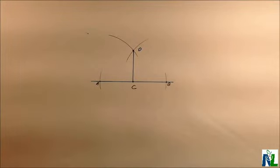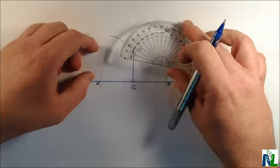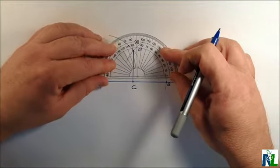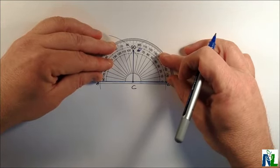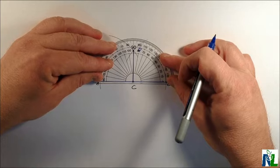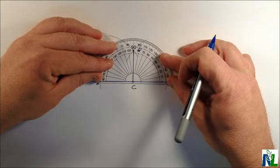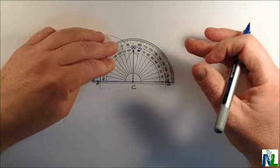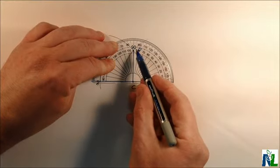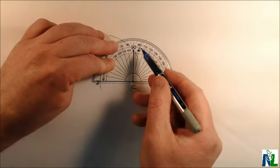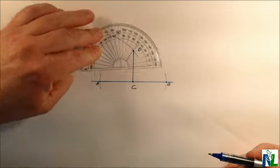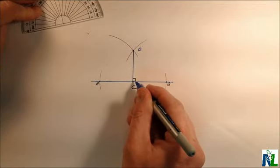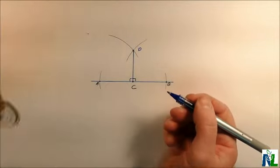Let's verify that. We'll use our protractor. And indeed, angle DCB or DCA are 90 degree angles. So segment DC is perpendicular to segment AB.